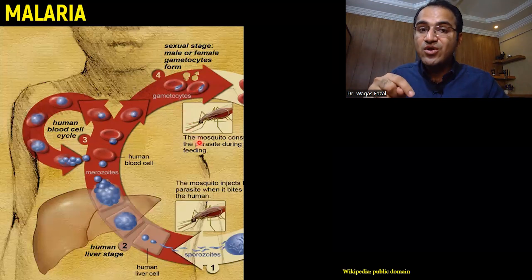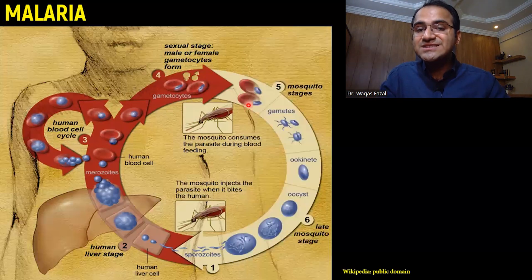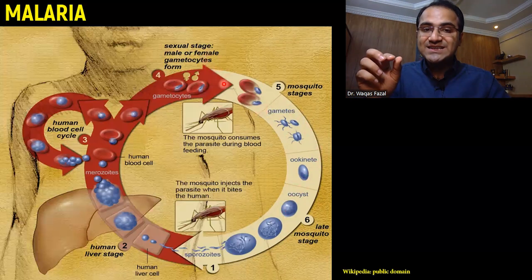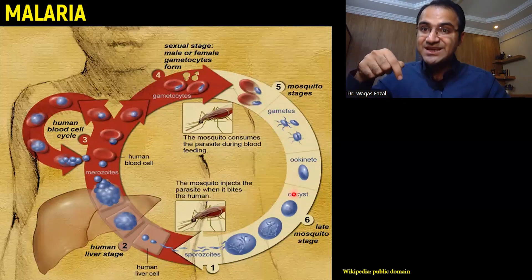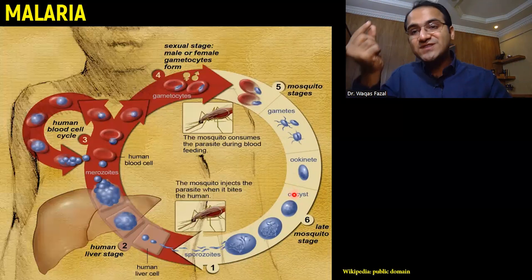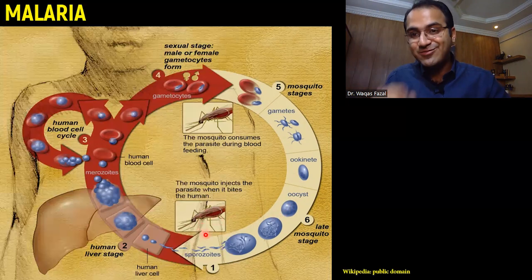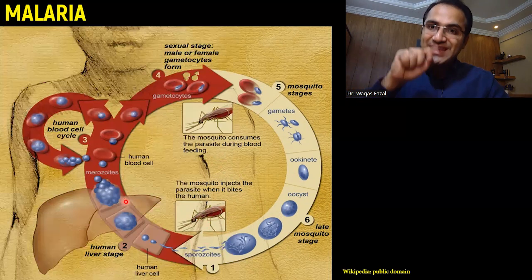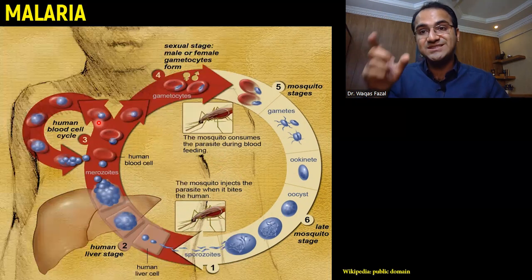With the second bite of the female anopheles mosquito, the mosquito takes up these gametocytes and they fertilize within the mosquito, ending the human cycle and starting the mosquito cycle. These gametocytes fertilize within the anopheles mosquito, sporozoites are formed, and then this sporozoite is again injected into the blood of a healthy person.